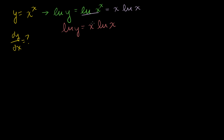Now we take the derivative of both sides with respect to x. On the left side, we apply the chain rule — this is implicit differentiation. The derivative of the natural log of y with respect to x is: dy/dx times the derivative of natural log of y with respect to y, which is 1 over y. So the left side is dy/dx times 1 over y.